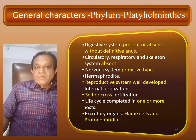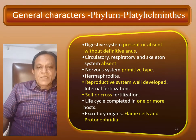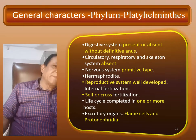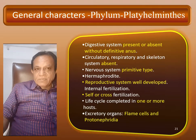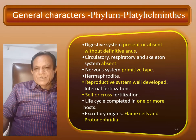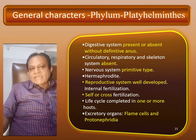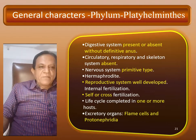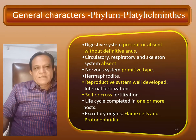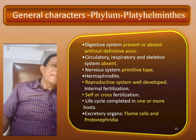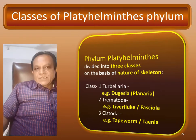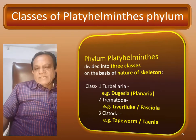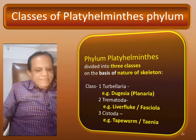Reproductive system is well developed, internal fertilization, life cycle completed in one or more hosts, excretory organs are flame cells and protonephridia. In classes there are three classes — Turbellaria, Trematoda, and Cestoda — and these are the examples: Planaria, Fasciola, and Taenia.